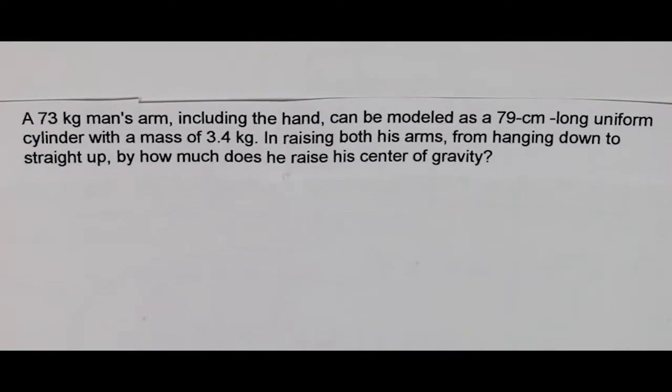A 73 kilogram man's arm, including the hand, can be modeled as a 79 centimeter long uniform cylinder with a mass of 3.4 kilograms. In raising both his arms from hanging down to straight up, by how much does he raise his center of gravity?